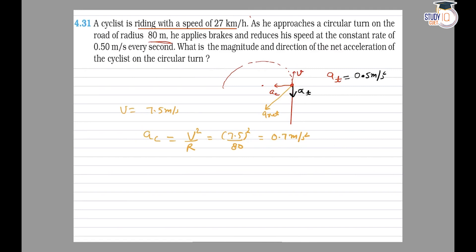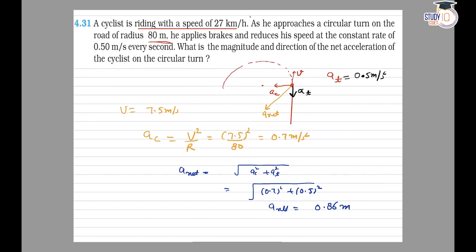We have centripetal acceleration 0.7 and tangential acceleration 0.5 meters per second squared. From this we can find the net acceleration, which equals the square root of ac squared plus at squared. This equals the square root of 0.7 squared plus 0.5 squared, giving a net acceleration of 0.86 meters per second squared.